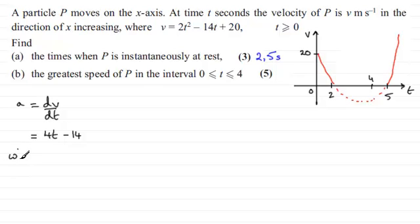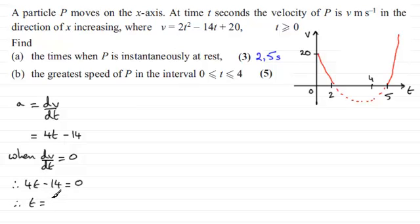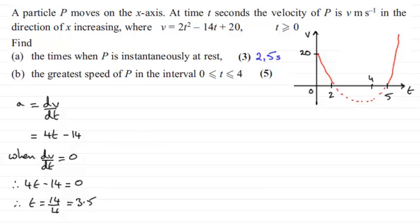So when the acceleration, dv/dt, equals zero, we get that 4t minus 14 equals zero. Working this out — adding 14 to both sides and dividing by 4 — you end up with t equalling 14 over 4, which is 3.5. We should know by symmetry — and this is the other way to get it — that because the curve crosses the axis between t equals 2 and t equals 5, midway between 2 and 5 is going to be 3.5. So I could have actually got that value of t very easily rather than necessarily doing the calculus method.